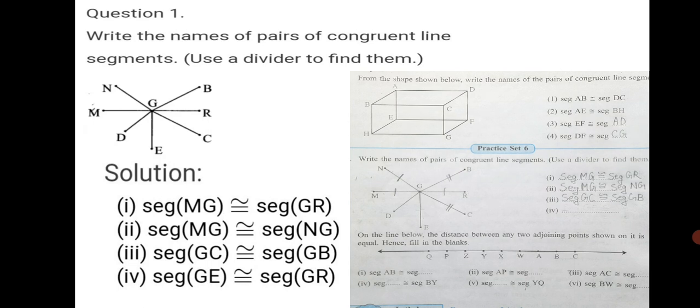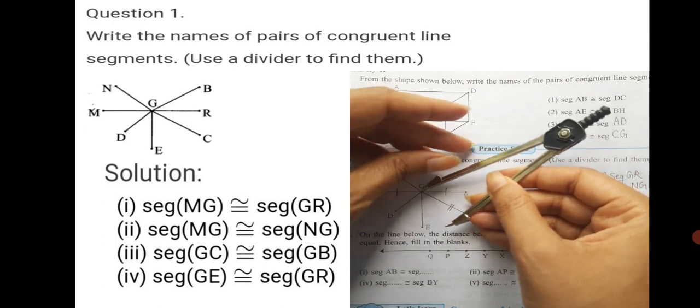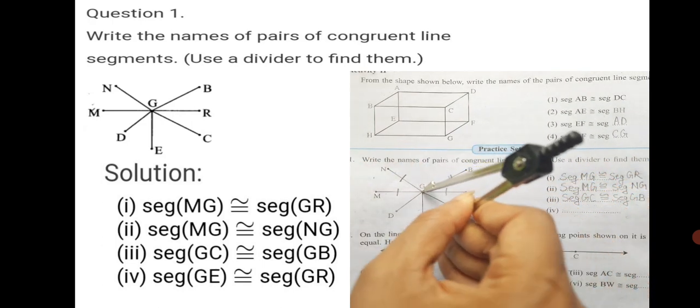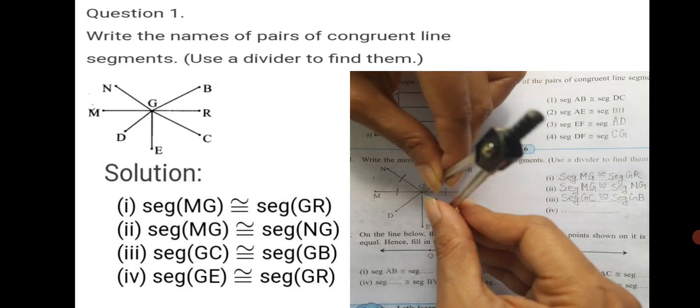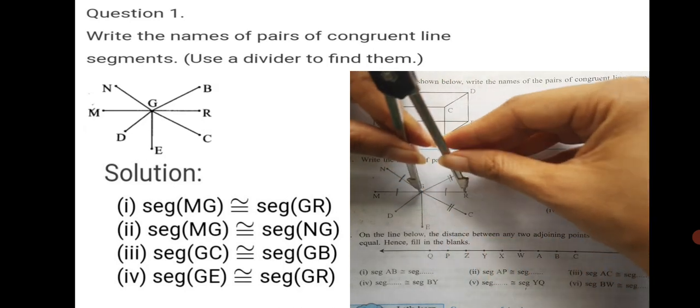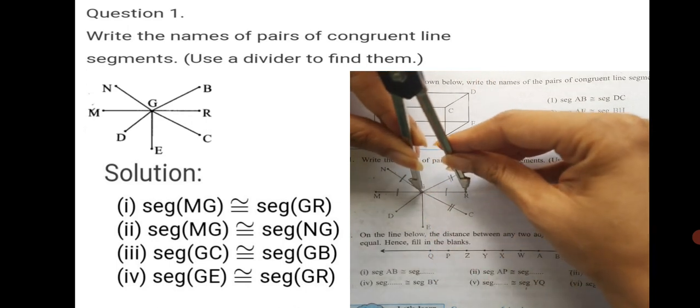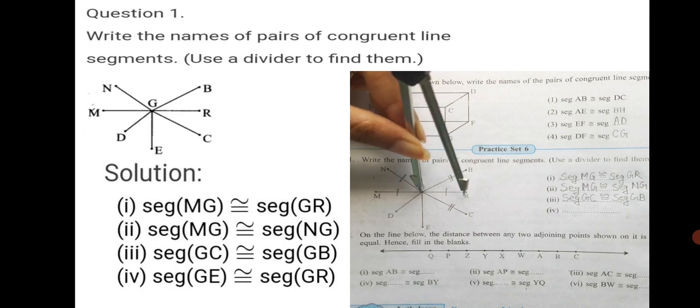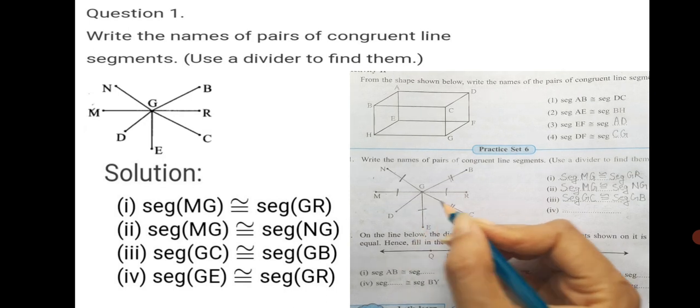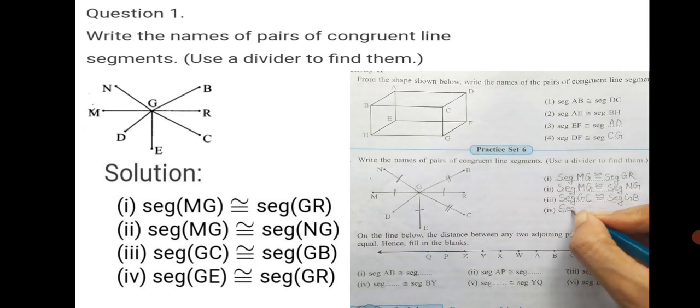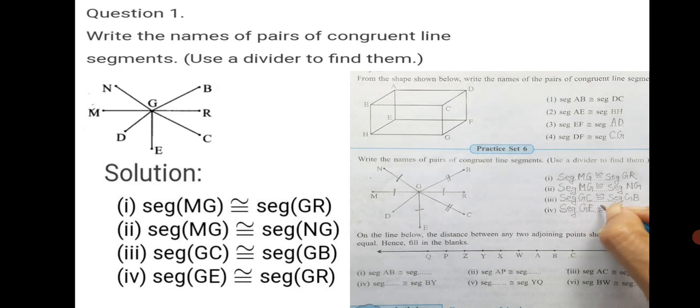Which ones are left? Let's see seg GE which is left. Is it congruent to any other side? Seg GE we take in the divider. Adjust the divider such that you would take the end points perfectly and check with whom it will match. Is it matching with GR? Yes. GE is matching with GR perfectly. Equal distance. We can mark here with a single line because GR is also marked with a single line to show that they are equal. And write down seg GE is congruent to seg GR.